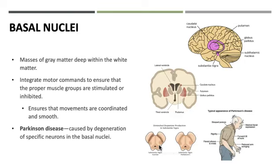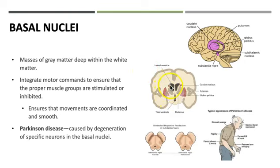The basal nuclei — formerly called basal ganglia — are actually a makeup of several different structures. The term 'ganglia' refers to a collection of cell bodies outside the central nervous system, but the basal nuclei are cell bodies within the brain. Whenever we have a collection of cell bodies in the brain, we call it a nuclei — not to be confused with the nucleus of a cell.